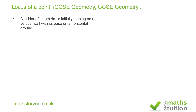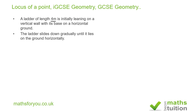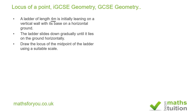The problem says: a ladder of length four meters — and that four meters is important — is initially leaning on a vertical wall which is based on the horizontal ground. Then the ladder slides down gradually until it lies on the ground horizontally. We need to draw the locus of the midpoints of the ladder using a suitable scale.